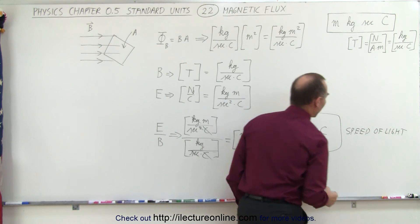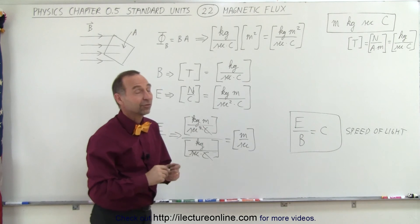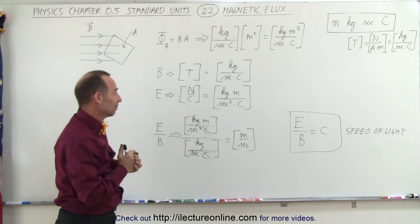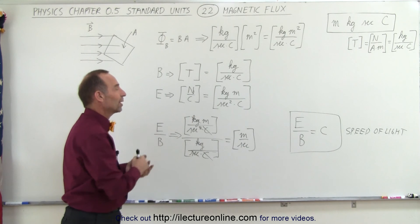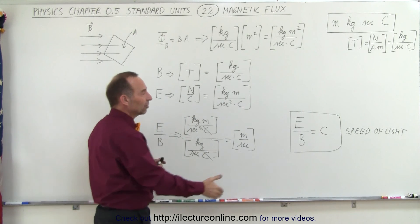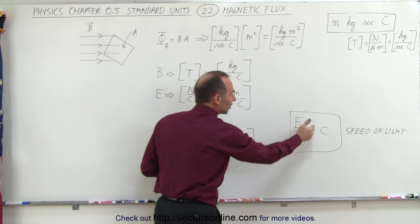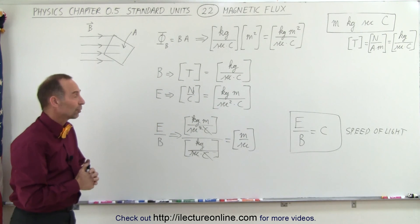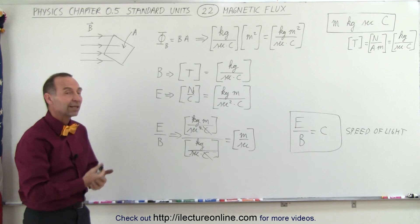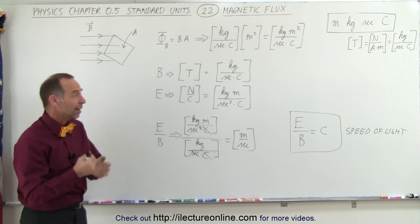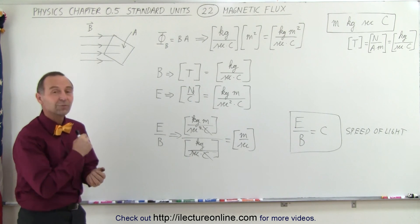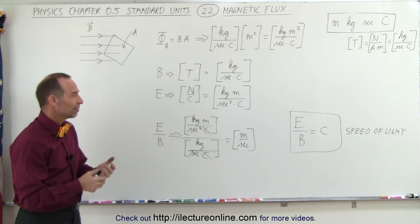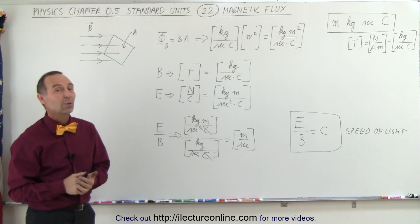Notice how things can be figured out by using units in such a way that we now have a concept of the relationship between the electric field and the magnetic field in terms of the speed of light. Many things in physics were discovered simply by manipulating the units — saying, well, how about this? This may be correct. And then, of course, they go and find out that they were indeed correct. Quite interesting.